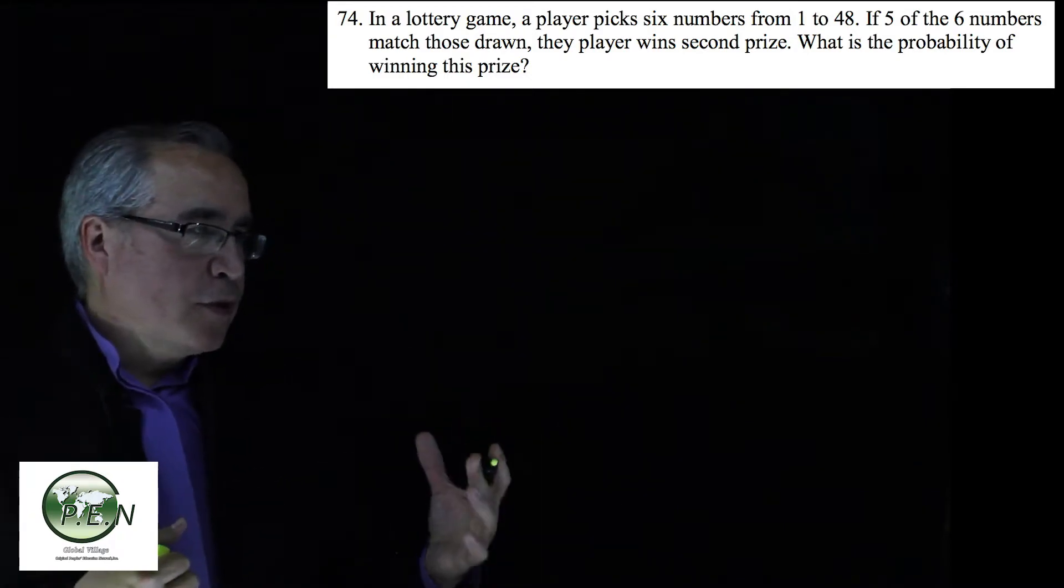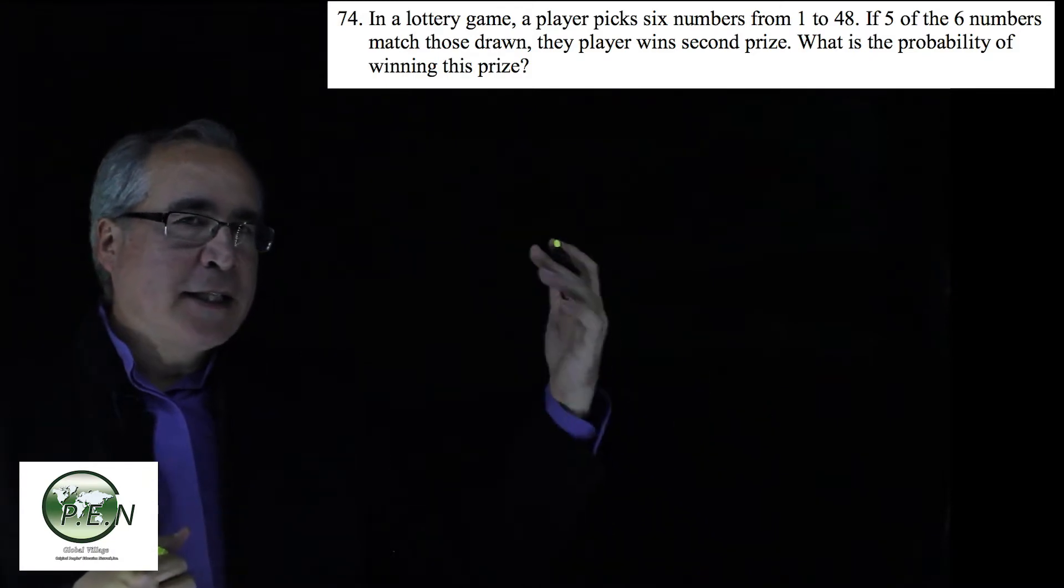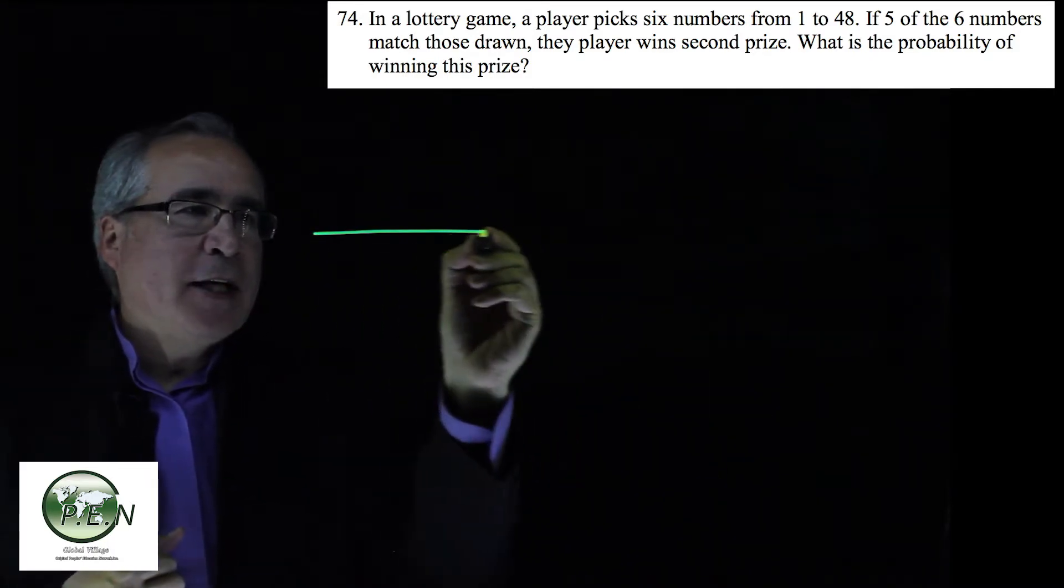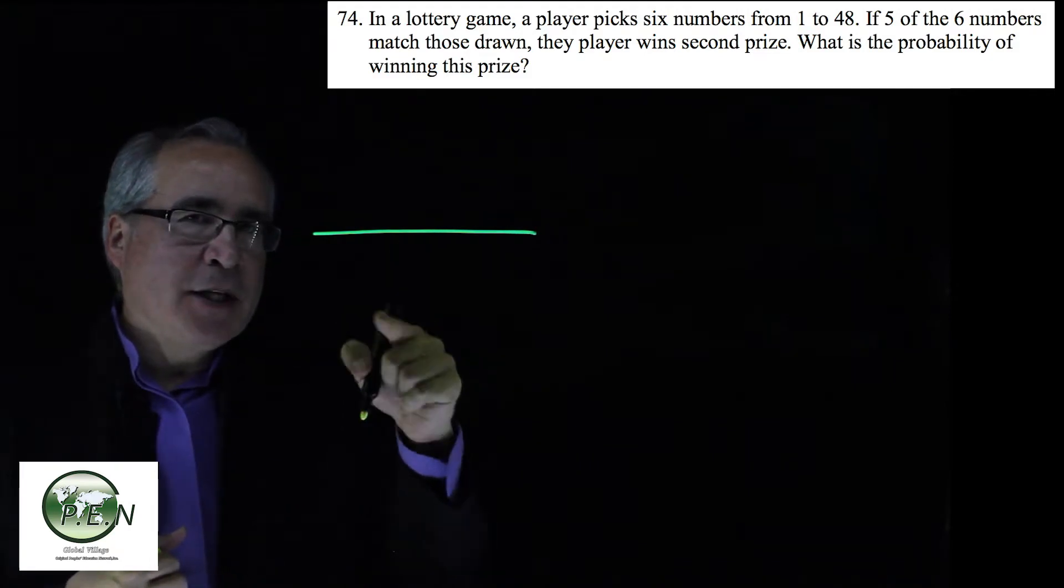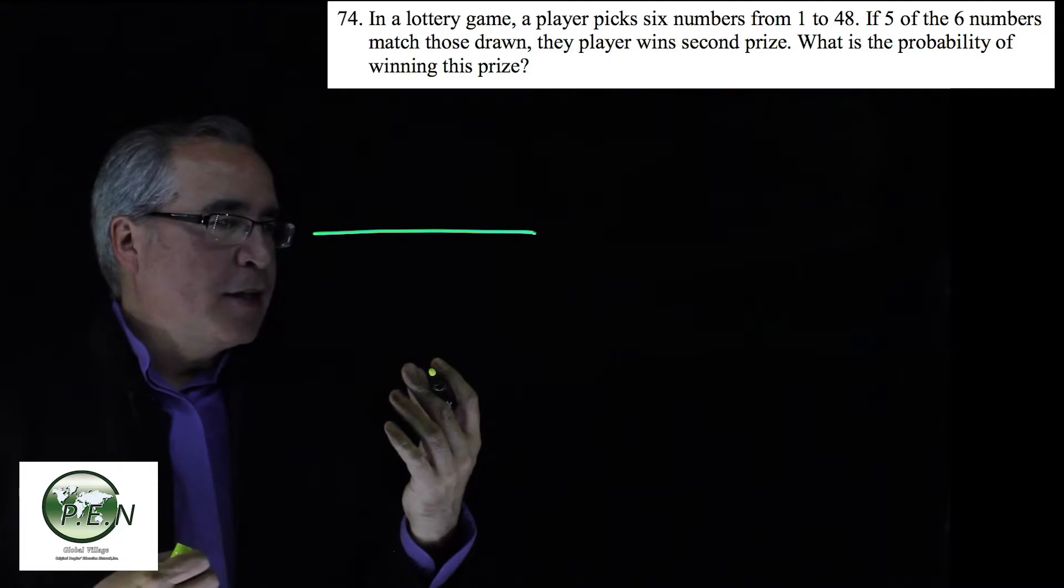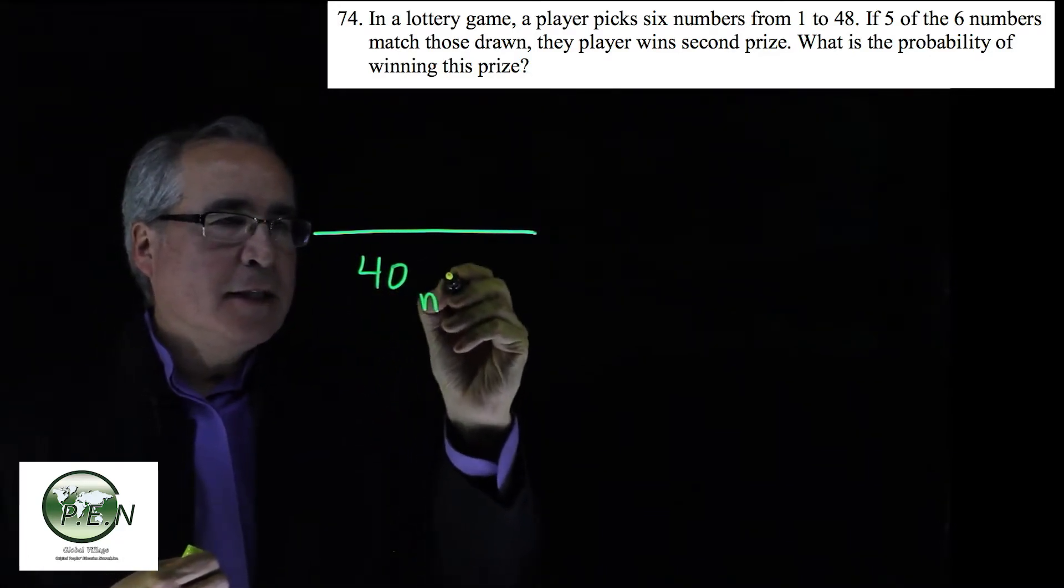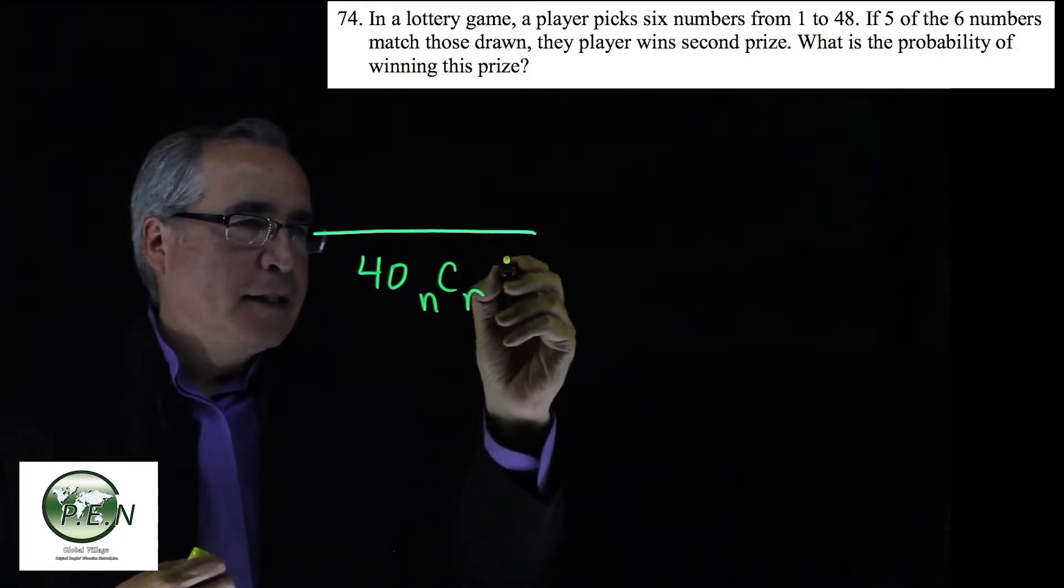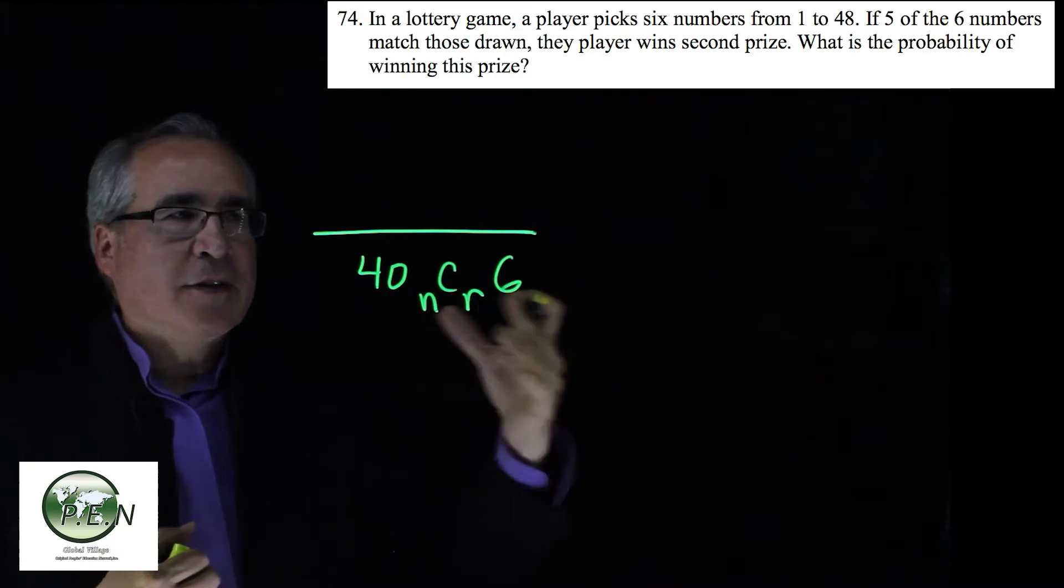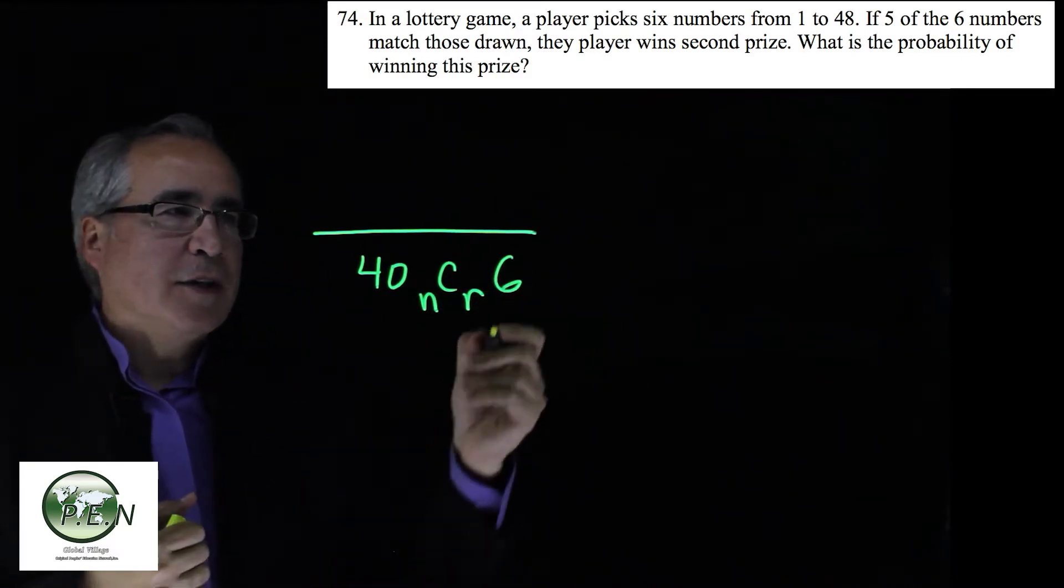As with most lotteries, the order the balls are drawn out, the order the numbered balls are drawn out is not important. So it's a combination. So what we've got as far as the total possible ways to draw the six numbers out of the 48 is 48 NCR 6. We'll choose those six numbers. That's how the game plays. So that's what our probability is. That's the total number of ways to choose the six numbers.